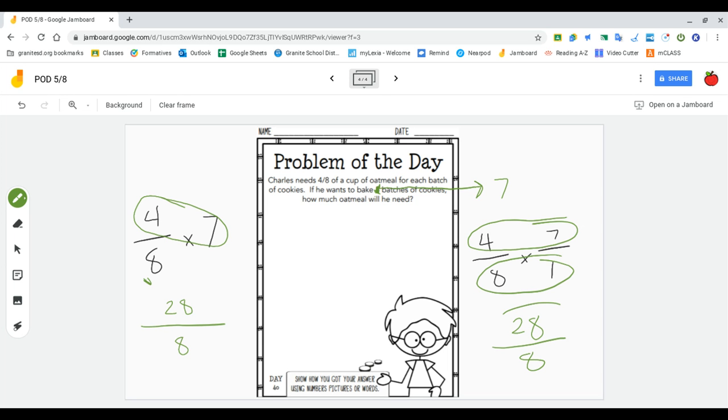So 28 eighths is technically correct because it's the answer to the multiplication problem. However, it's an improper fraction and we could simplify it and it'd be more correct. So we're going to do that now. In order to do that we need to change it into a mixed number. So I'm going to do that here on the left-hand side.